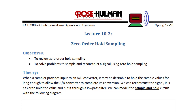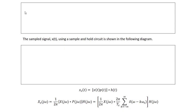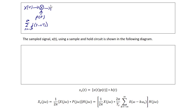We can model the sample and hold circuit with the following diagram. We have the input X(t) multiplied by a pulse train P(t), where P(t) equals the summation from N equals negative infinity to infinity of delta(t minus N·TS). The signal then goes through H(t), and the output is the sampled signal XS(t), where H(t) is defined as rect of (t minus T/2) divided by T.